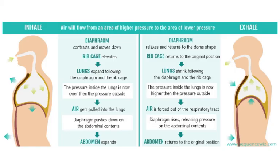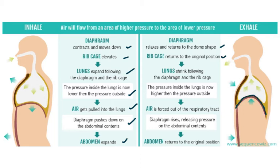A comparison of inhalation and exhalation: during inhalation the diaphragm contracts and moves down, the rib cage elevates, the lungs expand following the diaphragm and rib cage, pressure inside the lungs is lower than outside, and air is pulled into the lungs. The diaphragm also pushes down on the abdominal contents and the abdomen expands. During exhalation the diaphragm returns to its dome shape, the rib cage returns to its original position, the lungs shrink, pressure inside is higher, air moves out, and the abdomen goes back in.